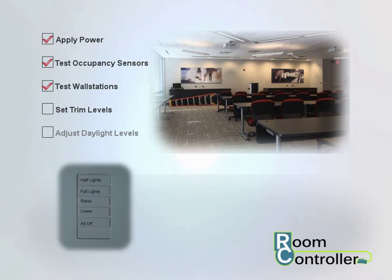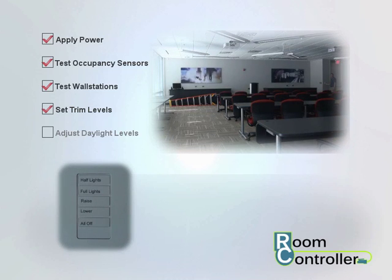Save the new trim settings and go back to normal operation by pressing the All Off button on any wall station. If All Off is not pressed, the controller will automatically save the settings after 2 minutes.